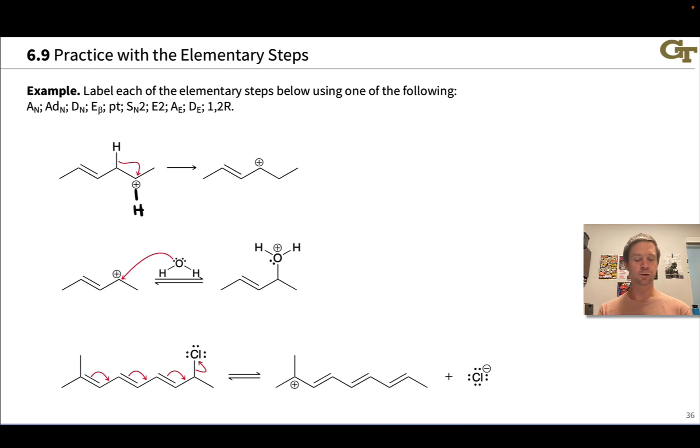The first thing we're going to do is label each of these steps given the reactants and products and the electron flow in the form of curved arrows. Here are the 10 possible labels. We'll remind ourselves what these mean as we go through the example problems, and we've got three examples of elementary steps.